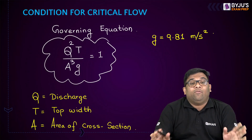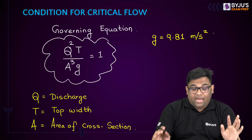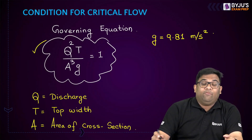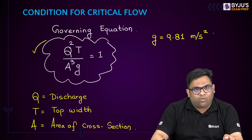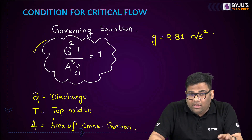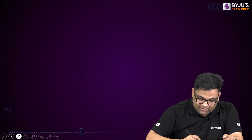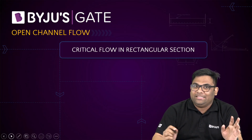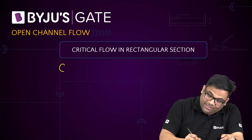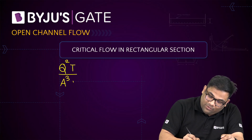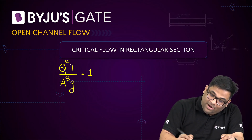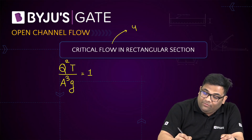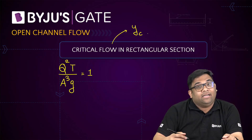This is the governing equation for critical flow, and from here we can find out the critical depth. Let us see that for a rectangular section — critical flow in a rectangular section — we will use this equation to find out Yc.